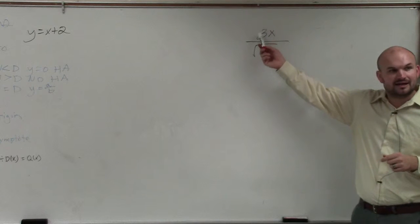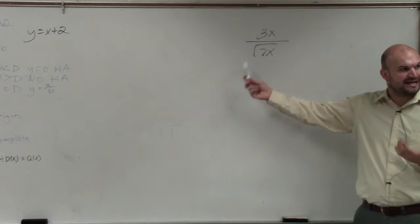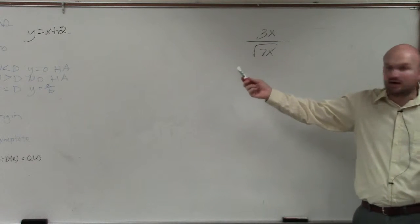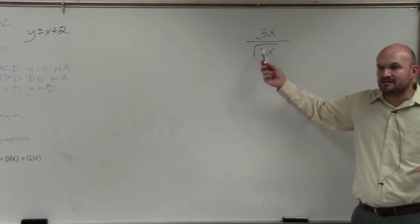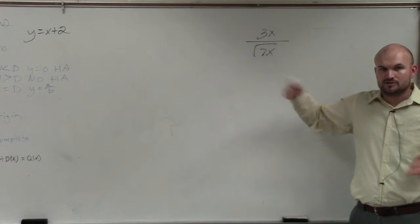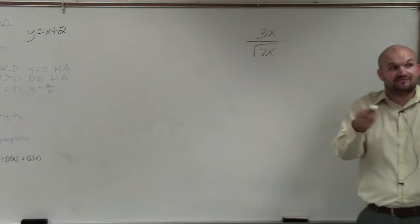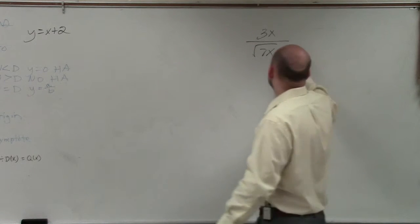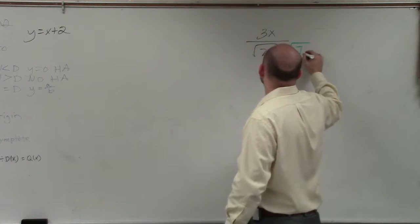So what we like to do is simplify it, and we simplify it by rationalizing the denominator. We don't want to divide an expression by an irrational, right? Because you can't take the square root of 7x.